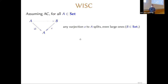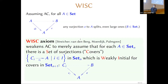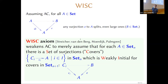WISC is a simple variation on that where you replace the role of the identity function on A by just some small family of things. The WISC axiom says that for every set A in some universe Set_n, you can find in the same universe a set of surjections — weekly initial among all the surjections from any universe into A — so that if I have any surjection e: B → A where B might lie in a larger universe, there's some element c_i of the weakly initial family which factors through e.